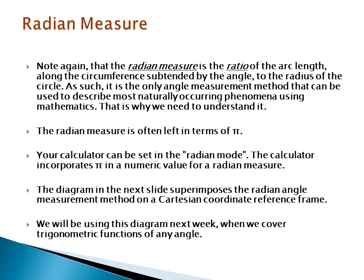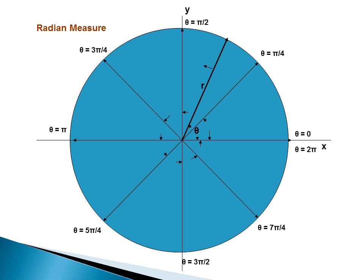The radian measure is often left in terms of pi. Your calculator can be set in radian mode, and it incorporates pi as a numeric value for a radian measure. The diagram in the next slide superimposes the radian angle measurement method on a Cartesian coordinate reference frame. Going around, theta can be expressed in terms of pi: one quarter around is pi over 2 radians, halfway round is pi, and three quarters of the way around is 3 halves pi.